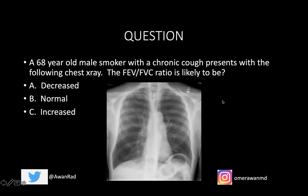We're going to start out with a question. A 68-year-old male smoker with a chronic cough presents with the following chest x-ray. The FEV to FVC ratio is likely to be — is it decreased, normal, or increased? Hopefully the chest x-ray will help you decide, and we'll come back to this question at the end of the lecture.